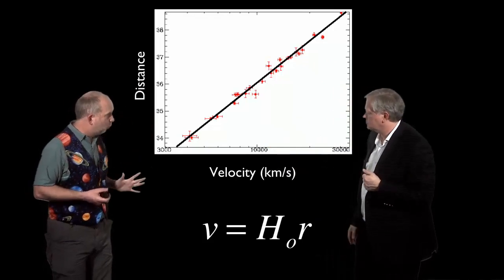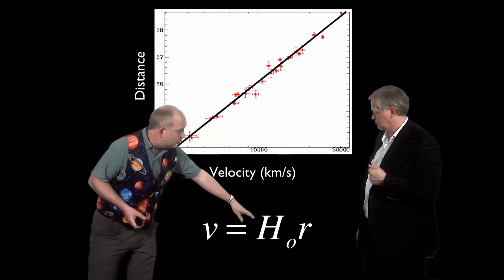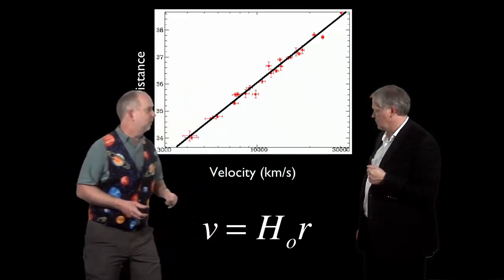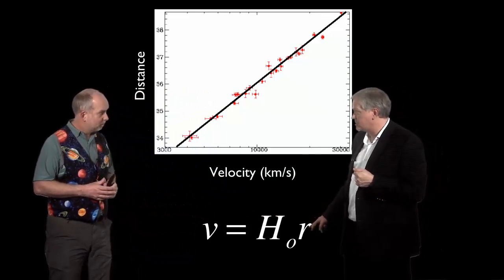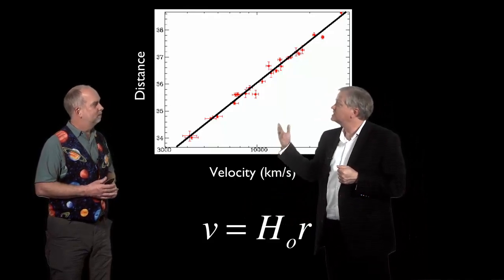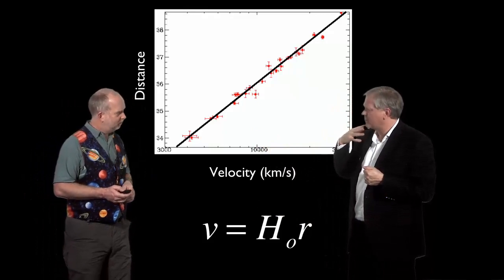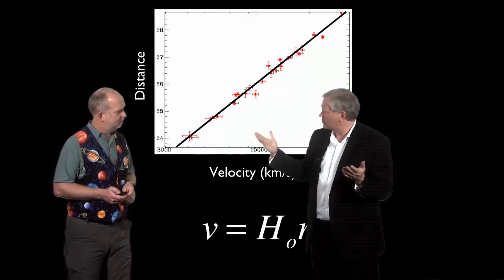And this is known as the Hubble law, and it's parameterized as the velocity is proportional to a constant, Hubble's constant, which is about 70 kilometers per second per megaparsec times the distance. So 70 kilometers per second per megaparsec means if I'm a megaparsec away, I expect to be moving with a velocity of 70 kilometers per second away from us. But away from us. Now, everything is moving away from us. This is something that Edwin Hubble discovered in 1929.